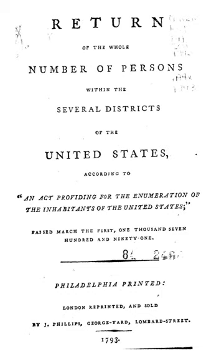OMB defines the concept of race as outlined for the U.S. Census as not scientific or anthropological, and takes into account social and cultural characteristics as well as ancestry, using appropriate scientific methodologies that are not primarily biological or genetic in reference. The race categories include both racial and national origin groups. Race and ethnicity are considered separate and distinct identities, with Hispanic or Latino origin asked as a separate question.